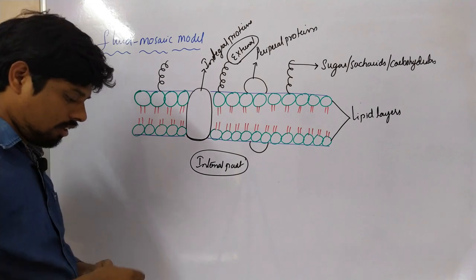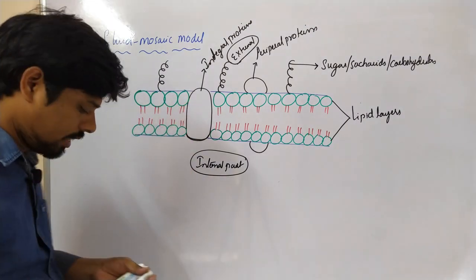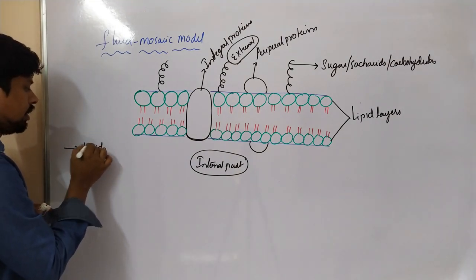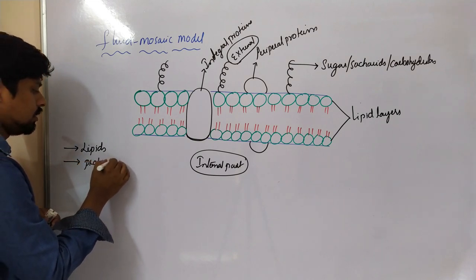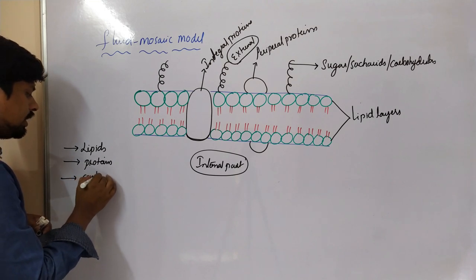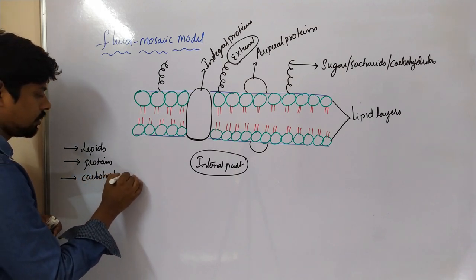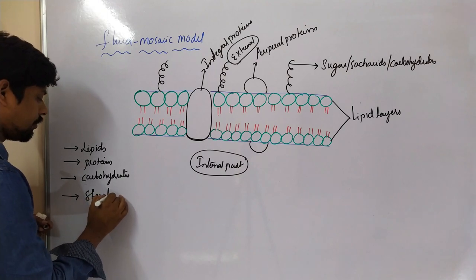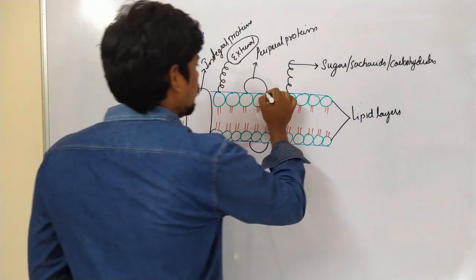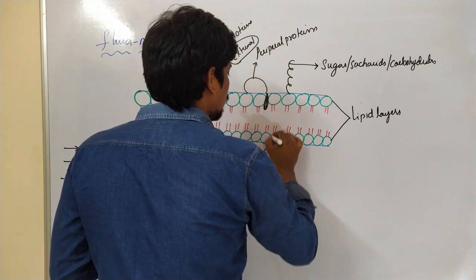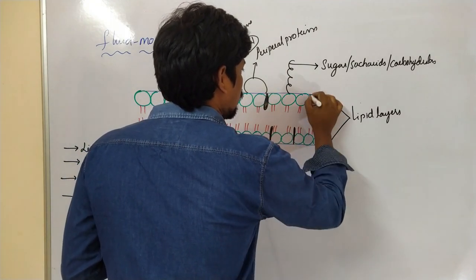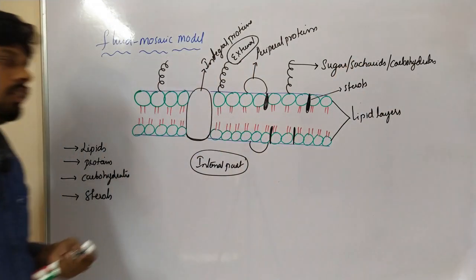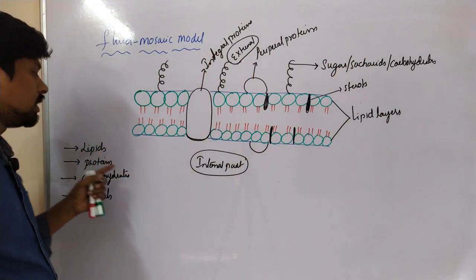What are the components present in the plasma membrane? The plasma membrane contains lipids, proteins, carbohydrates, and sterols. These are the structural components present in the plasma membrane.